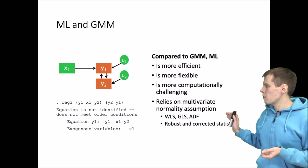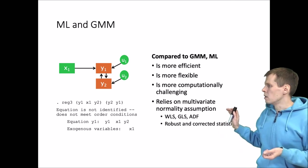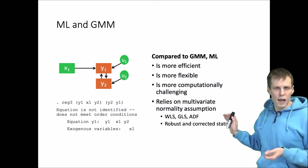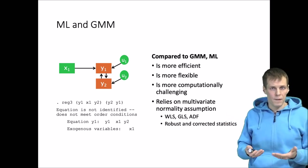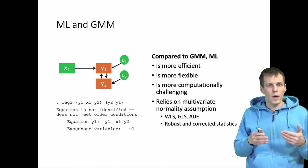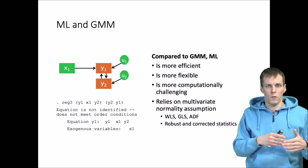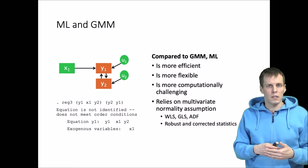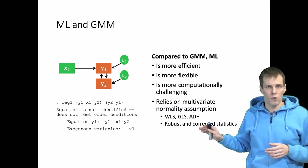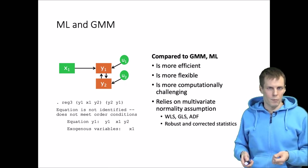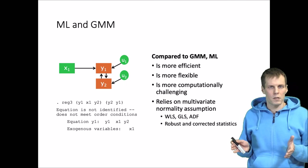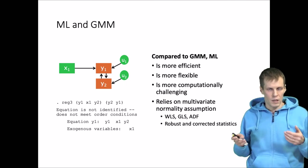And there is the multivariate normality assumption, but that can be relaxed by applying other techniques from the same family that use a different measure for 'as close as possible' for the fitted matrix and observed matrix, such as the ADF estimator. And there are also robust statistics that can be applied to correct these statistics if the violation of multivariate normality is a big concern with the data.